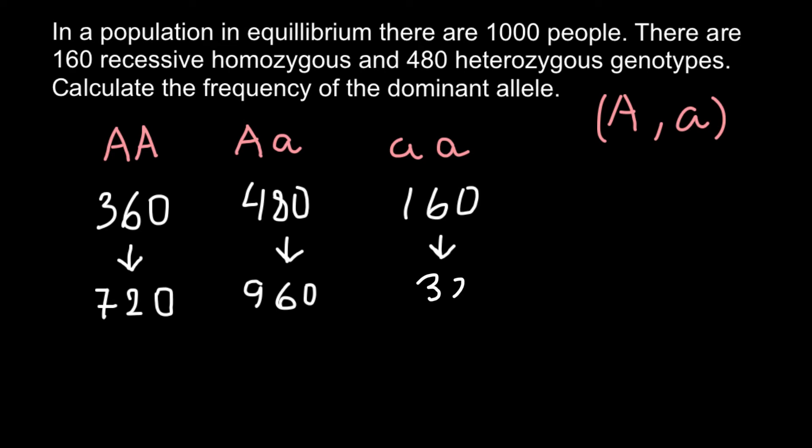The total number of recessive alleles here is 320. Now we need one more step. We now have the quantity of dominant alleles and quantity of recessive alleles, but also dominant and recessive alleles are present in the heterozygous individuals. That means half of this number would be dominant allele A and half would be recessive allele a.